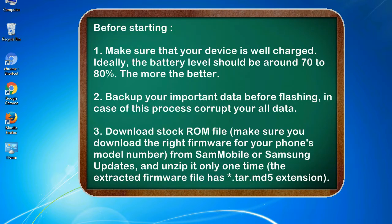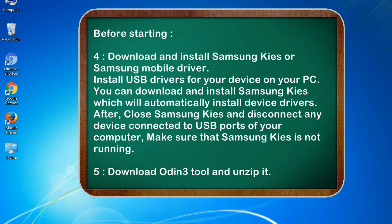Before starting: 1. Make sure that your device is well charged. Ideally, the battery level should be around 70 to 80% — the more the better. 2. Back up your important data before flashing, in case this process corrupts your old data. 3. Download the stock ROM file. Make sure you download the right firmware for your phone's model number from Sammobile or Samsung Updates, and unzip it only one time. The extracted firmware file has a .tar.md5 extension.